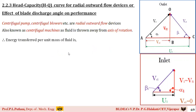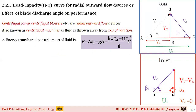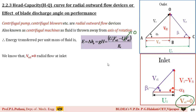The energy transfer per unit mass of fluid is written as E = ΔH0 = gH = (U2·VU2 − U1·VU1) / gc. We have already established that at the inlet velocity triangle the fluid enters radially, meaning VU1 = 0. Substituting VU1 = 0 makes that term zero, and the energy equation per unit mass becomes: gH = U2·VU2 / gc, expressed in terms of head.